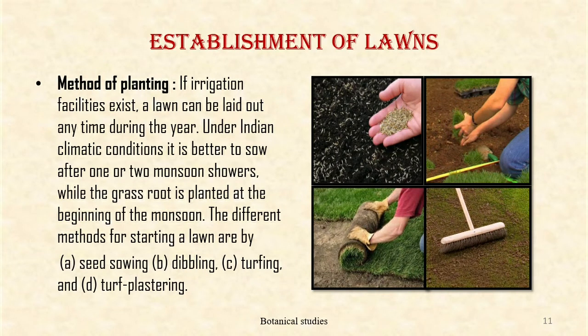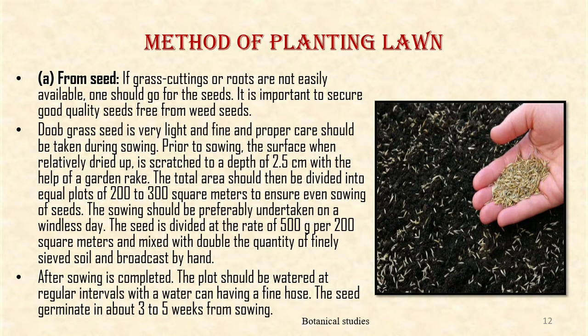Method of Planting: If irrigation facilities exist, a lawn can be laid down anytime during the year. Under Indian climatic conditions, it is better to sow after one or two monsoon showers, while the grass roots are planted at the beginning of the monsoon. The different methods of starting a lawn are by seed sowing, dibbling, turfing and turf plastering.